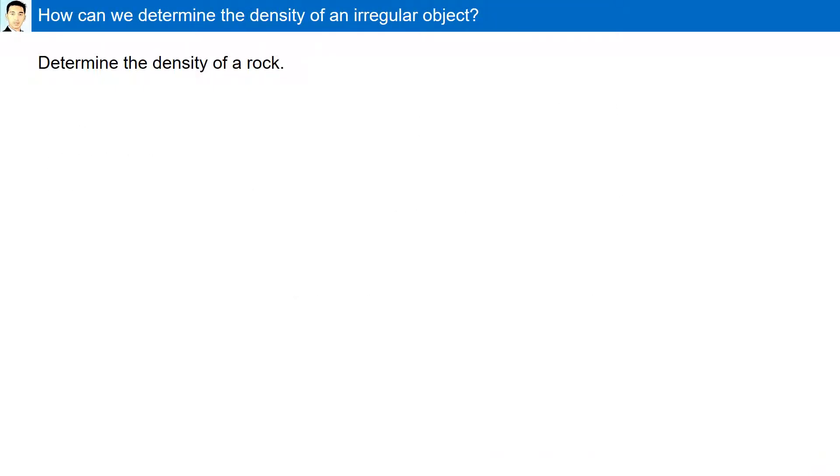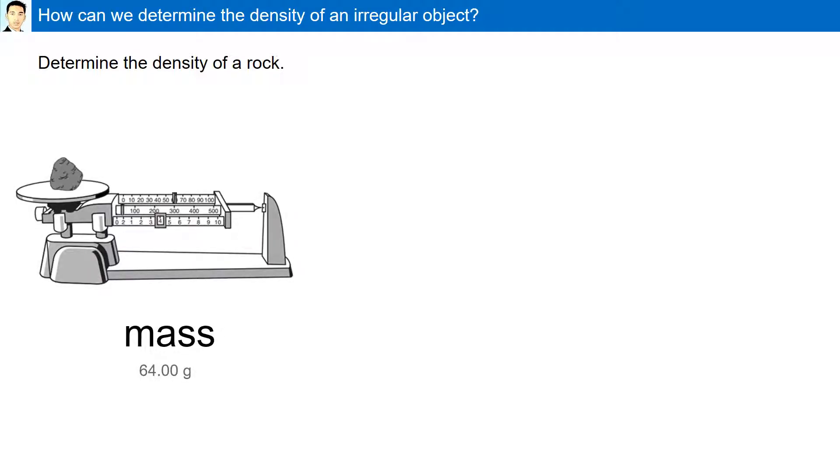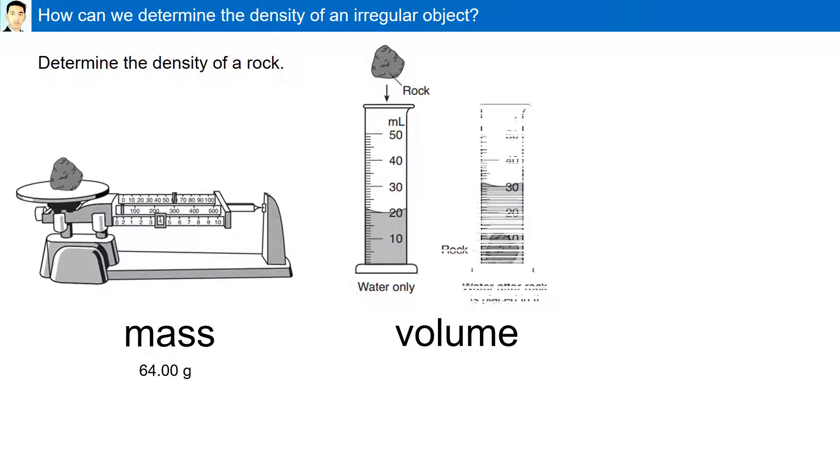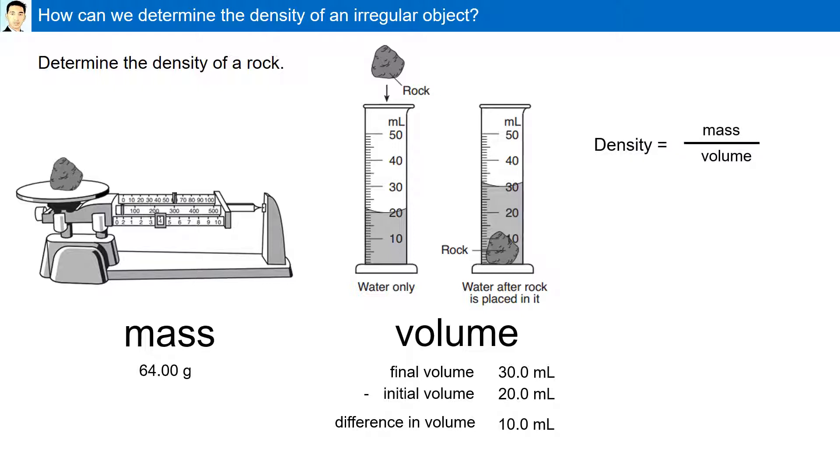How can we determine the density of an irregular object? Determine the density of a rock. First, we need to measure the mass of the rock. Here it is found to be 64.00 grams. Next, we must measure its volume. We can use water displacement, where when we drop the rock into a measuring cylinder of water, the difference in the water level will give us its volume. The initial volume is 20.0 ml, the final volume is 30.0 ml, the difference is 10.0 ml. Using our density formula, mass divided by volume, substituting, we have 6.40 grams per milliliter.